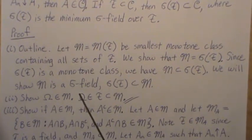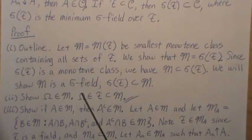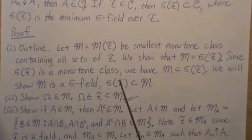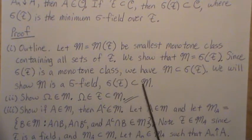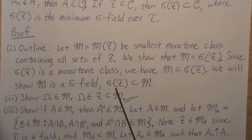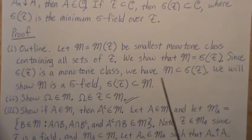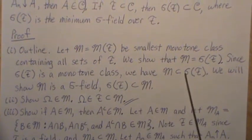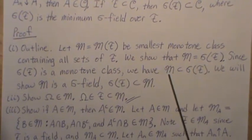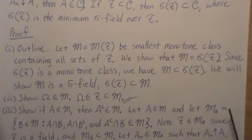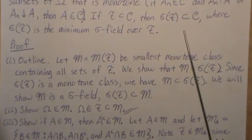We will show that M is a sigma field. If M is a sigma field containing F, and σ(F) is the minimum sigma field containing F, then σ(F) has to be a subset of M. But they can't be subsets of each other without being equal. And if they're equal, and M is the minimum monotone class, then σ(F) has to be a subset of every monotone class C.